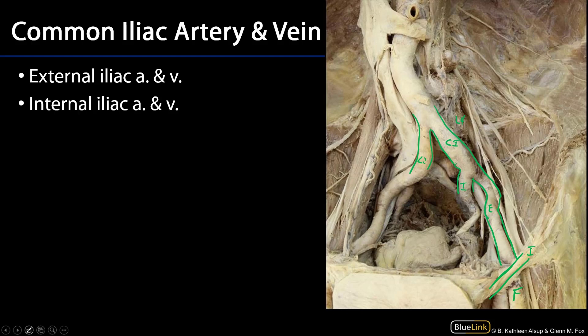The veins follow the same pattern. There's a femoral vein that becomes the external iliac vein proximal to the inguinal ligament, which continues up and joins the internal iliac vein to form the common iliac vein. We can see the common iliac veins and the inferior vena cava, and the bifurcation into the common iliac veins, which bifurcate into external and internal iliac veins following the same pattern as the arteries.